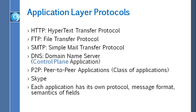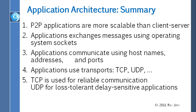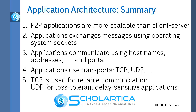Now that you know the basics of networking, we can talk about the application layers, going in this order: HTTP first, FTP second, SMTP, and so on. Before we go, let's summarize this module on application architecture. Five things we talked about: first, P2P versus client-server — P2P is more scalable, meaning many more people can be served. Second, applications use sockets for messaging. Third, applications have port numbers with well-known port numbers. Fourth and fifth, there are two transports: TCP for reliability and UDP for unreliable, delay-sensitive protocols like streaming.